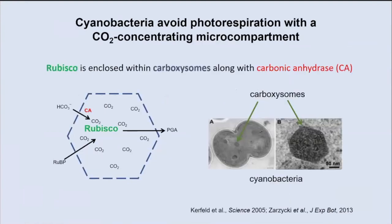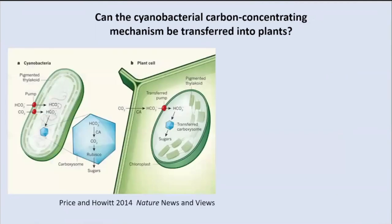Cyanobacteria avoid photorespiration with a CO2-concentrating microcompartment — the carboxysome. In this, Rubisco is enclosed within the compartment along with carbonic anhydrase. Bicarbonate enters, is converted to CO2, and then Rubisco has an enriched CO2 atmosphere to carry out carbon fixation. The question is: can we take this cyanobacterial carbon-concentrating mechanism and put it into plants? The idea is to transfer the carboxysome structure into a chloroplast — you would need hundreds of carboxysomes in there, and a pump to get the bicarbonate pumped in.